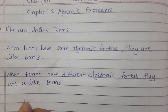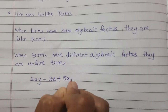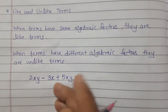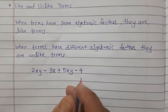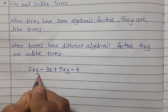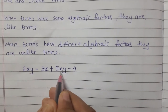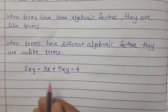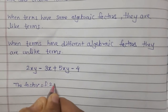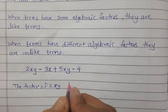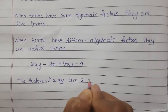See here, I will take one example: 2xy minus 3x plus 5xy minus 4. This is one example — this is an expression. In this expression, see the terms 2xy and 5xy. The factors of 2xy are 2, x, and y.